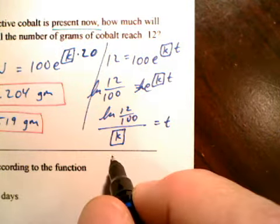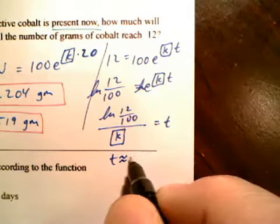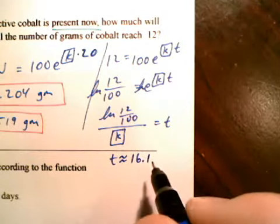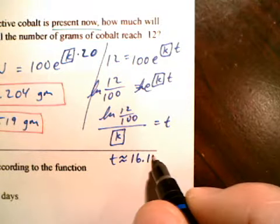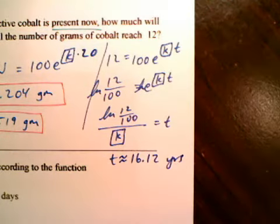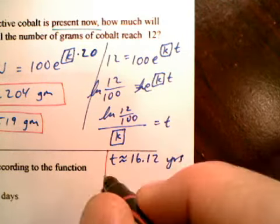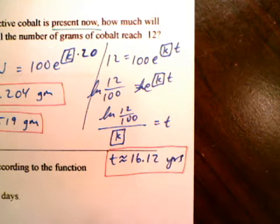And we're going to get 16.12 years. So T is about 16.120 years. There you go. All three parts. That took four minutes. Let's see how we do on number two.